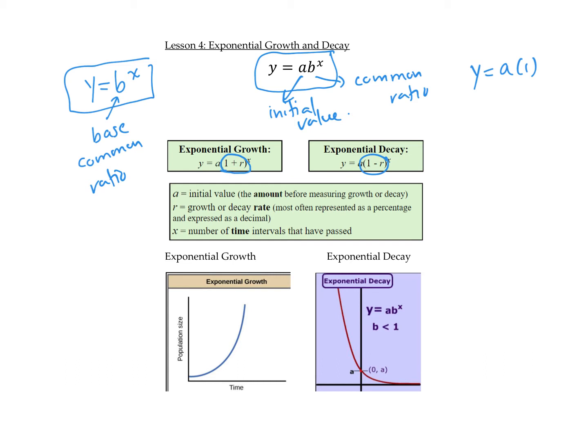So a is the initial amount, r is the growth or decay rate, often expressed as a percentage or decimal, and x is the number of times. Graphically, an exponential growth curve will go up—it's an increasing function because it's getting bigger. Exponential decay will go down—it's a decreasing function because it's getting smaller.